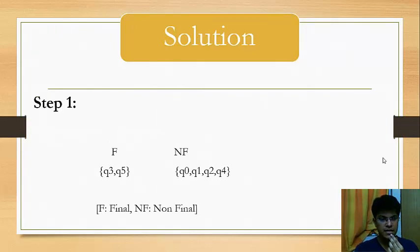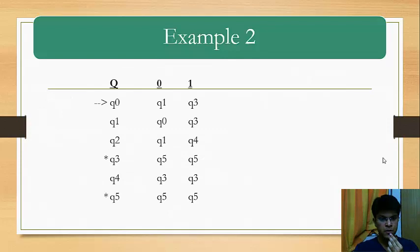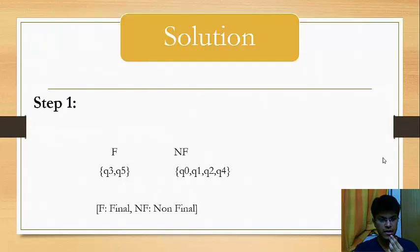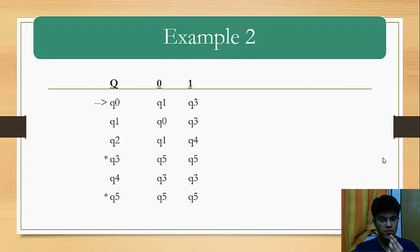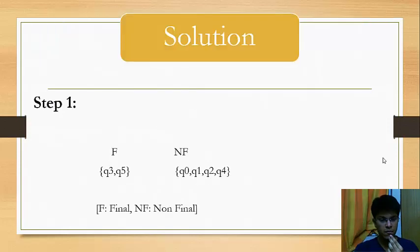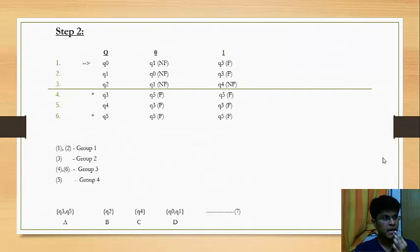Now, we proceed towards the solution. We mark the corresponding states as F and NF. You can see that Q3 and Q5 are the final states so we mark it as F and the rest of the states are non-final so we mark them as NF. Now, we go to step 2. In step 2, among the non-final states, pick the states with the same pattern and group them together. Similarly, do that for final states.